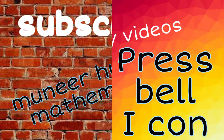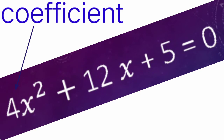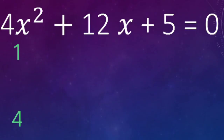We will solve without breaking the midterm. Here is the first question: 4x² + 12x + 5 = 0. First, we see the coefficient of x², which is 4. So we can write its two factors — smaller on top and greater on the bottom — either 1 and 4, or 2 and 2.